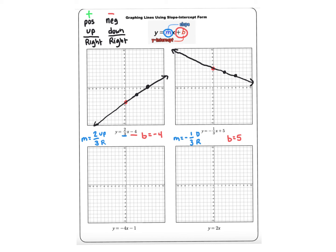Now let's look at slopes that don't have a fraction. In this case I have negative four. If there's no denominator, I put a one under it, giving me negative four over one. That tells me to go down four and right one. The y-intercept is negative one, so I start there, go down four and right one, then down four and right one again, and that gives me my line.